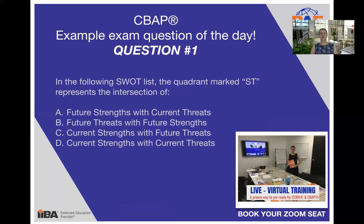In the following SWOT list, the quadrant marked ST represents the intersection of: a. Future strengths with current threats, b. Future threats with future strengths, c. Current strengths with future threats, and d. Current strengths with current threats. So which one of those options do you believe is the correct answer?